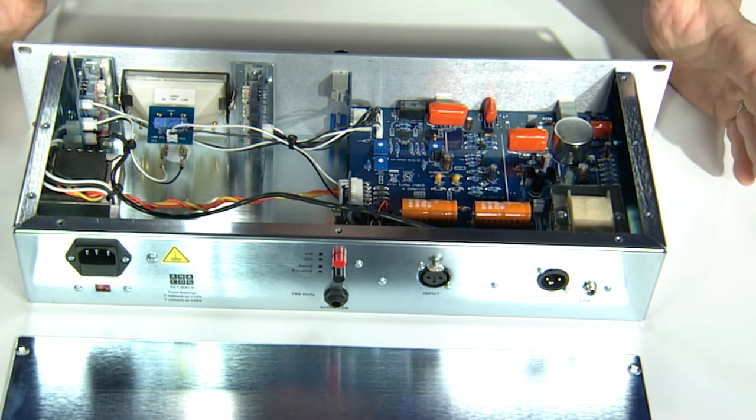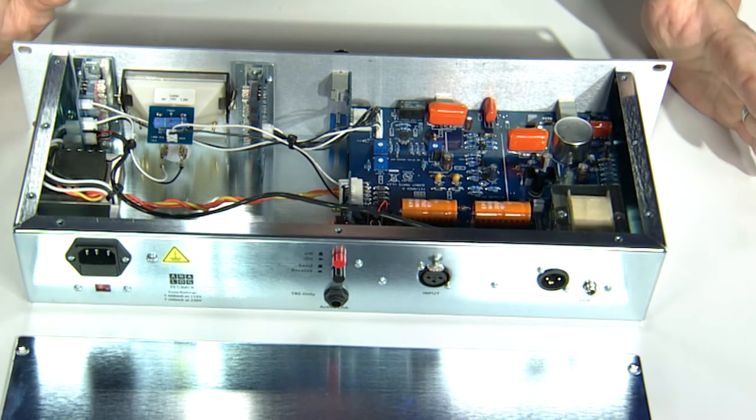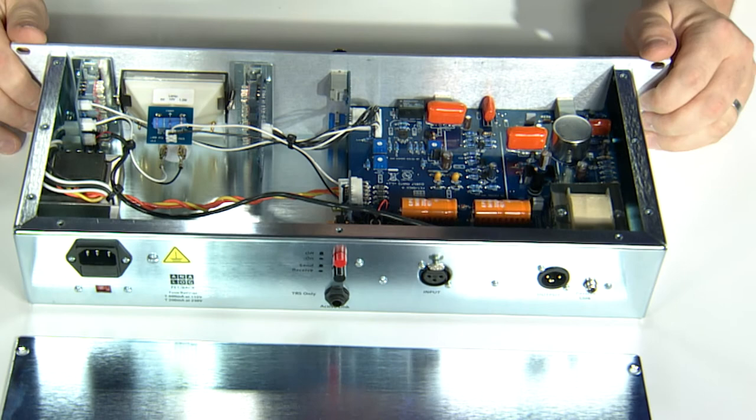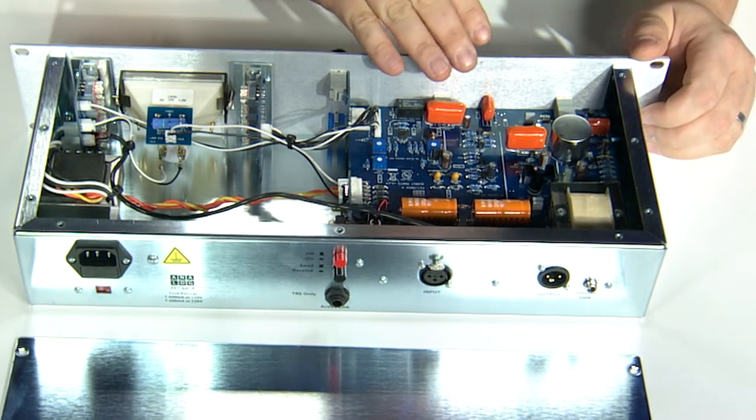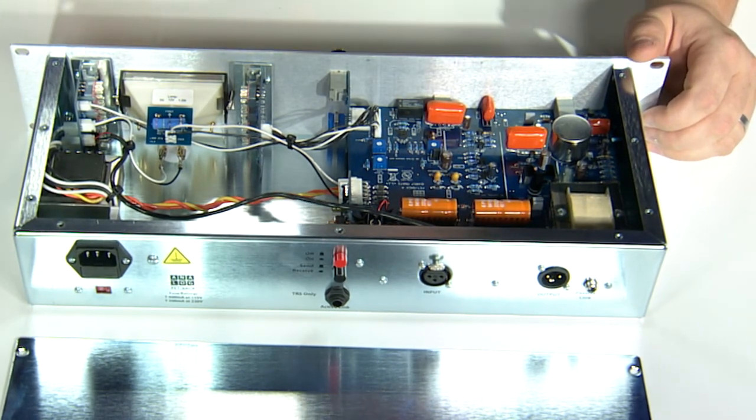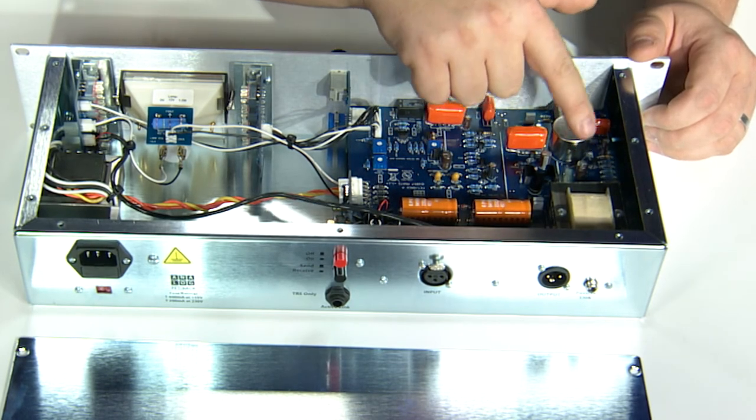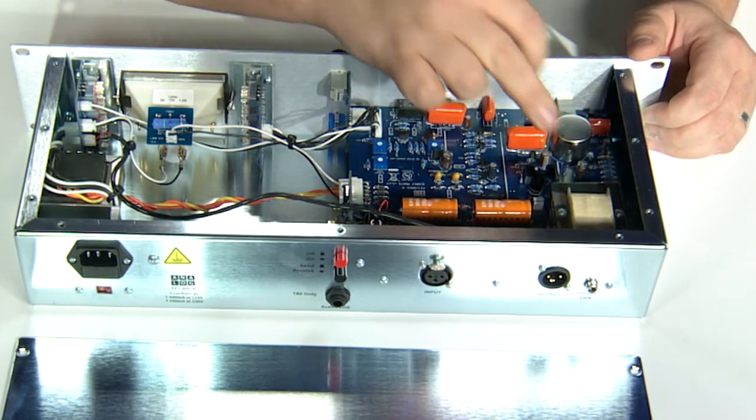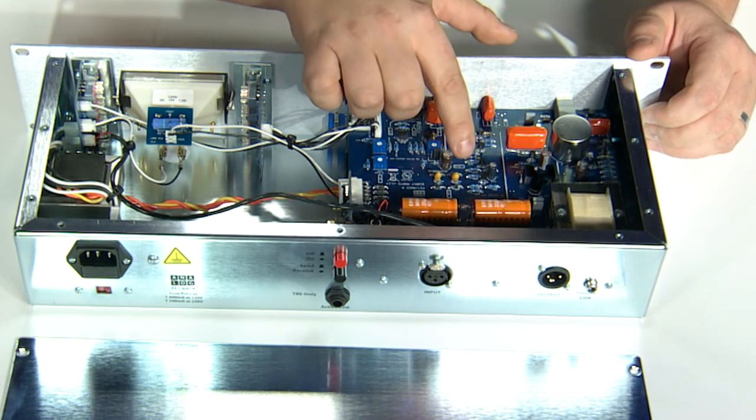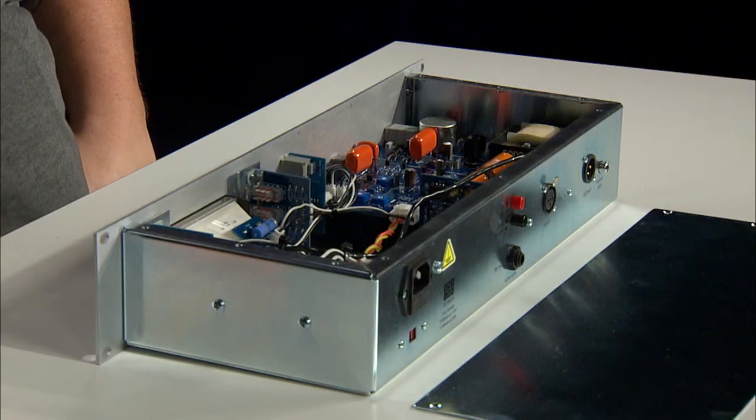The inside of the unit is beautiful. We've got the PCB here with all the components. Everything is uniform. Everything is labeled. We have a signal preamp right here. There are two transformers, our gain reduction control amp, our signal line amp.